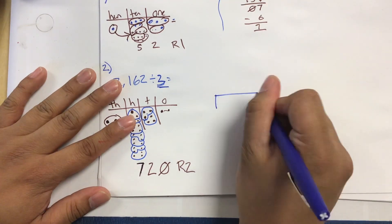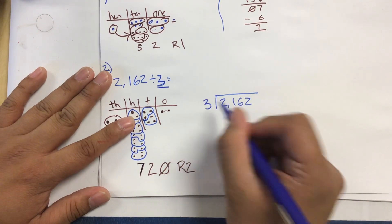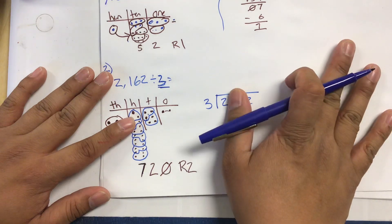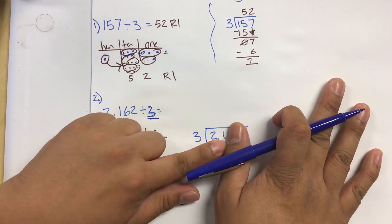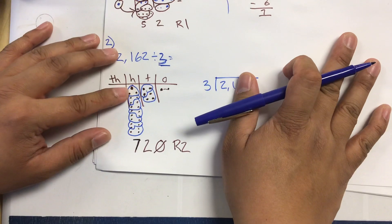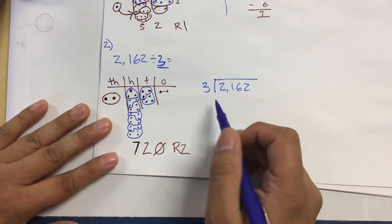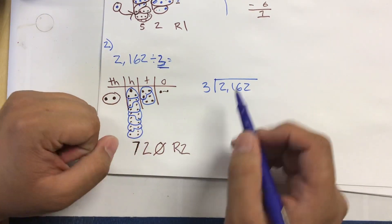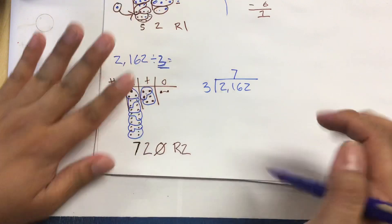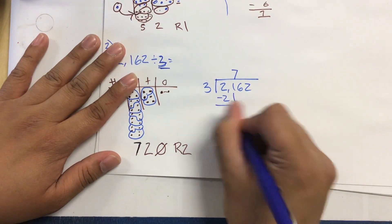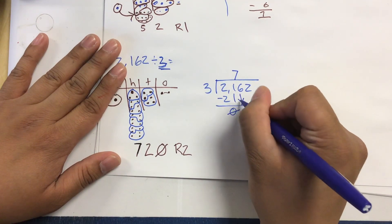Let's check this with long division: 2162 divided by three. I can't divide two into groups of three, so like before I move over and look at 21. Counting by threes: three, six, nine, twelve, fifteen, eighteen, twenty-one — that's seven groups. So 21 divided by three equals seven, and I subtract 21 from 21 to get zero.